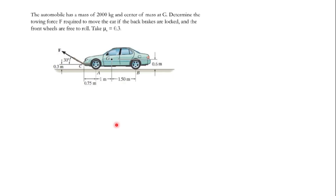Welcome to my YouTube channel. Today's topic is on drive friction. The question says: an automobile has a mass of 2,000 kg and a center of mass at G. Determine the towing force required to move the car if the back brakes are locked and the front wheels are free to roll.